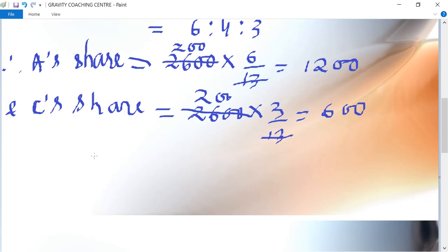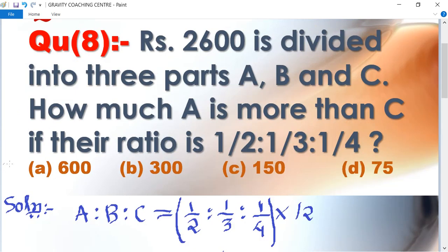So A is more than C. How much? The difference is 1200 minus 600 equals 600. So option A is the right answer.